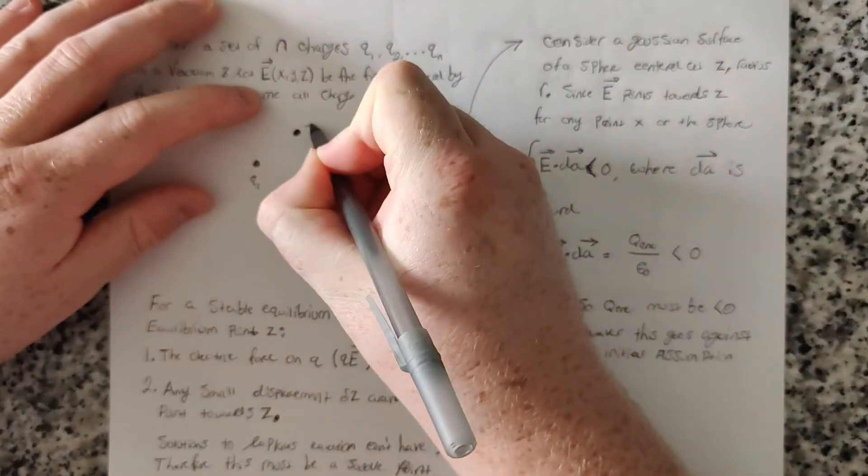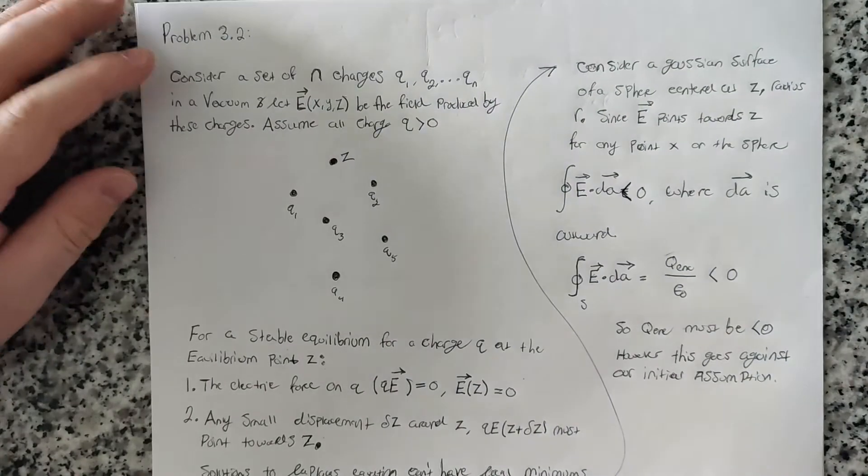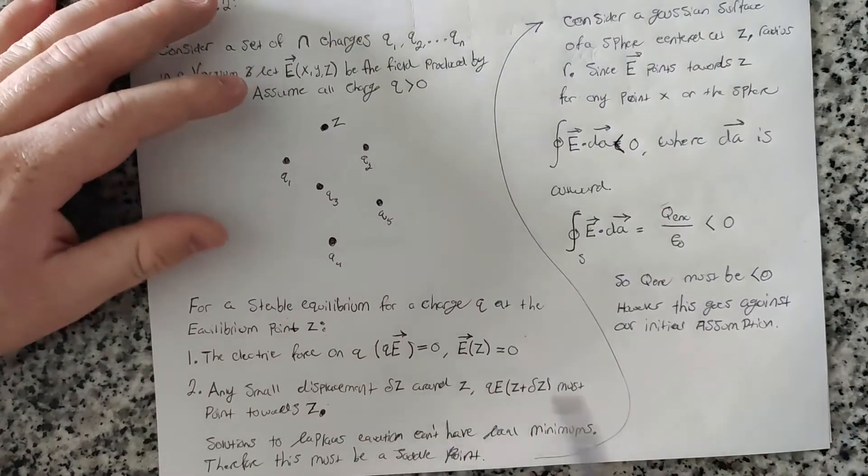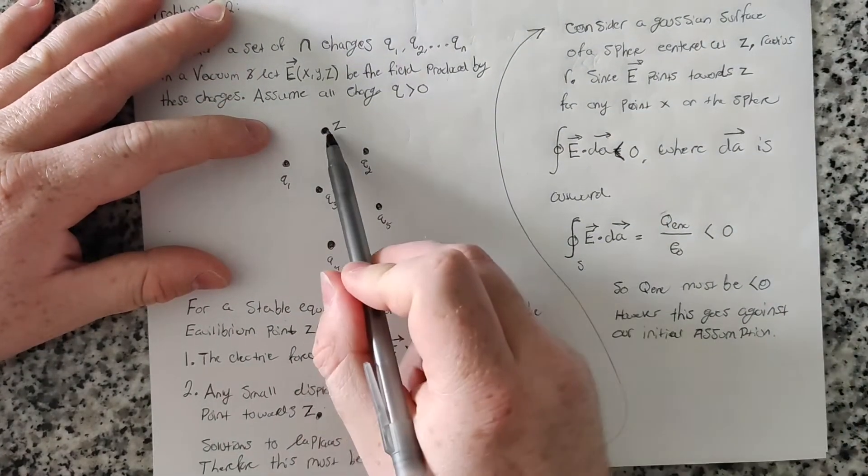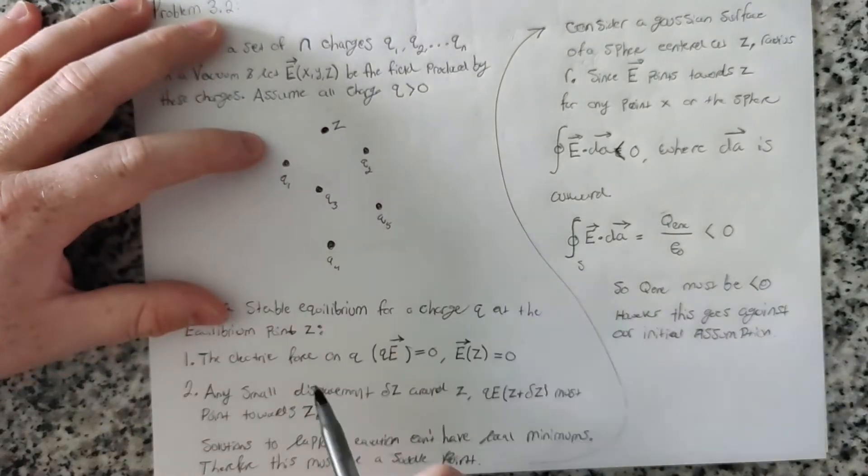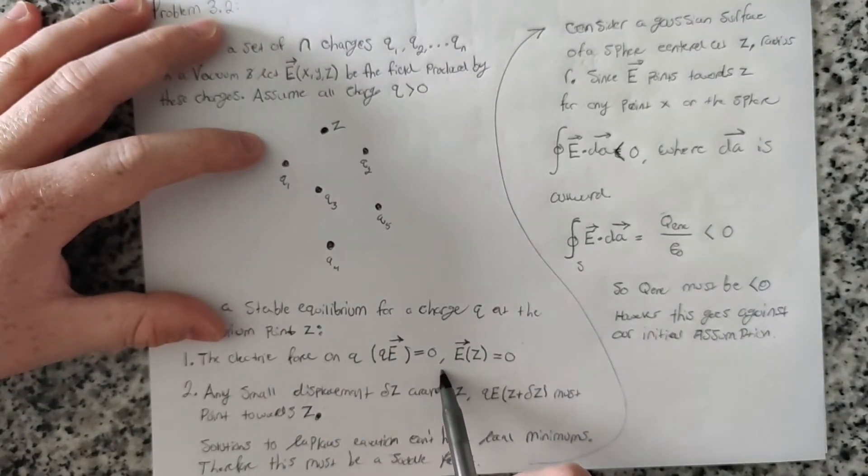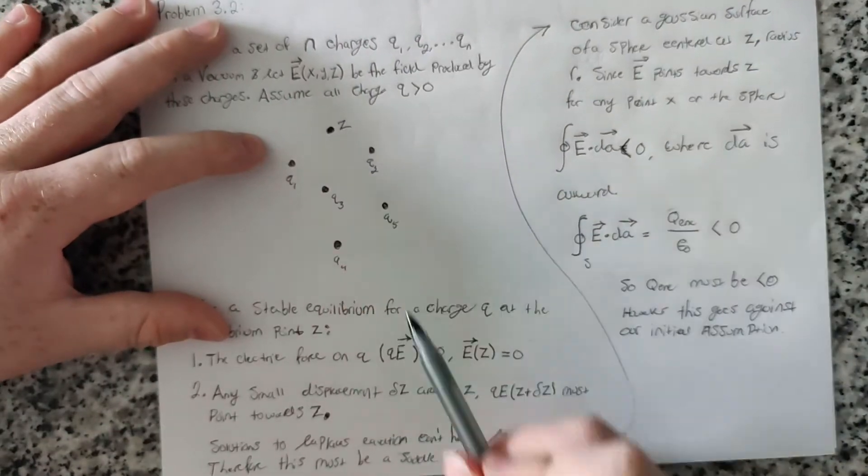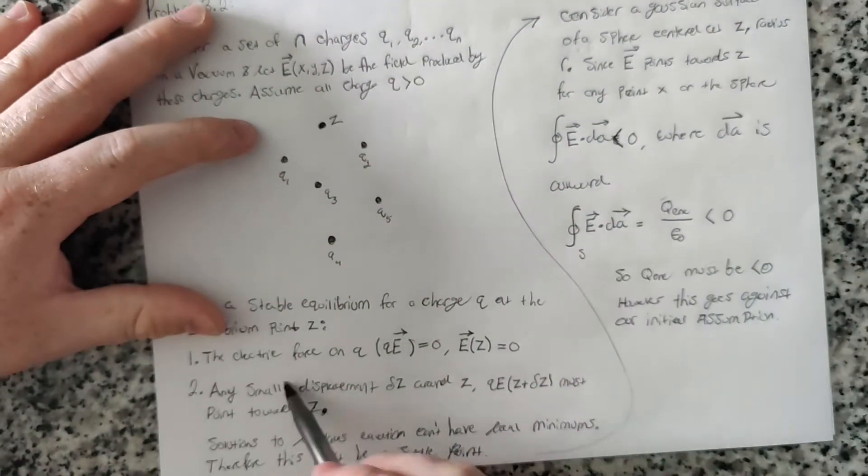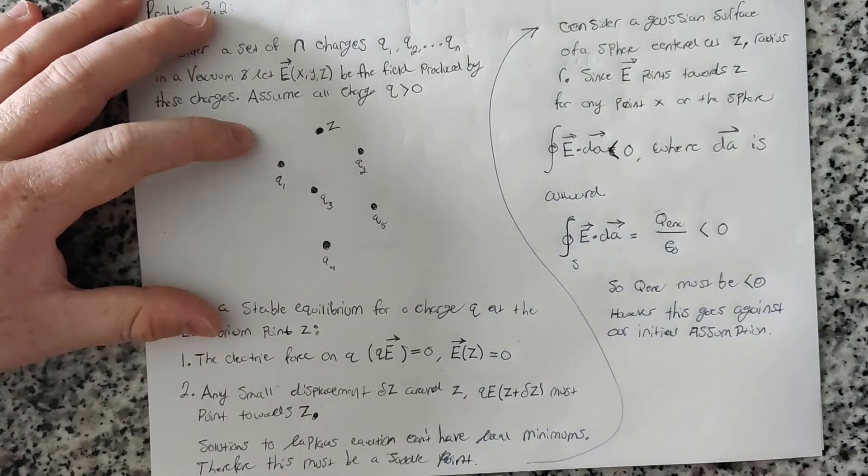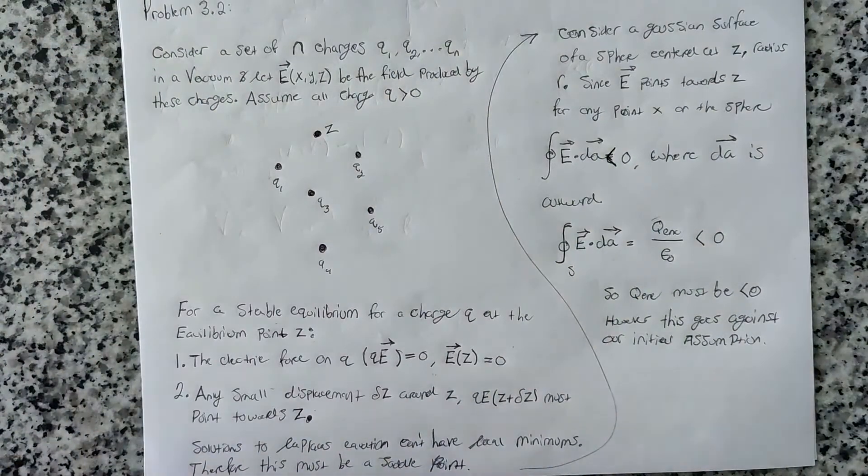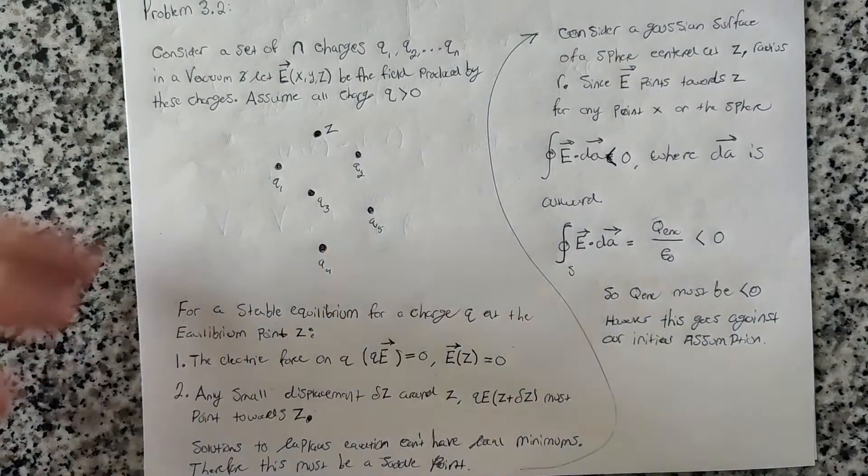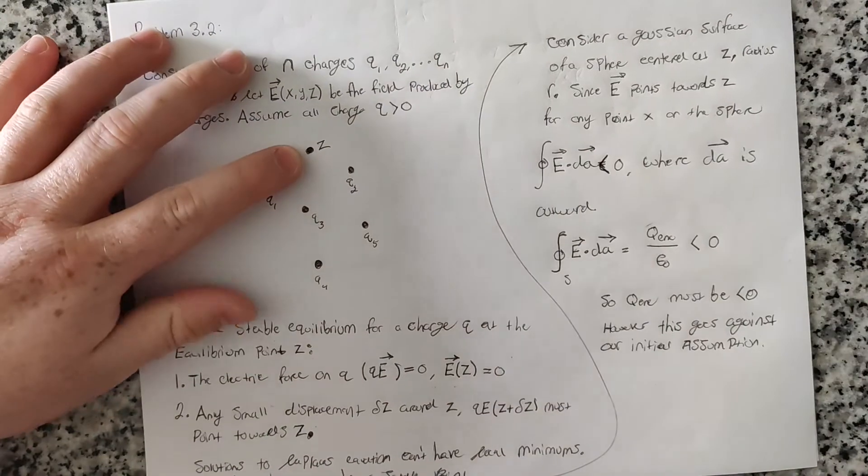Let's assume that this point exists for this problem. If Z was a stable equilibrium point, then the electric force at point Z would be zero, or the electric field at point Z would be zero, because the charge that we place there won't be zero, so the field has to be zero there.